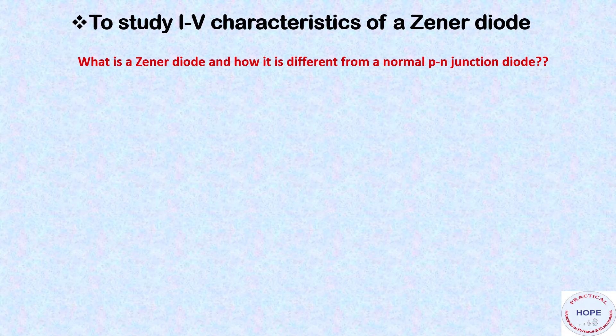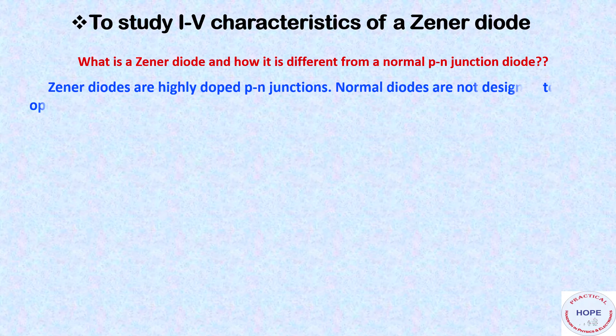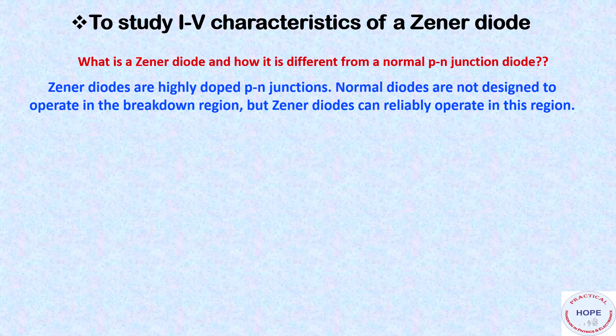What is a Zener diode and how it is different from a normal PN junction diode? Zener diodes are highly doped PN junctions. Normal diodes are not designed to operate in the breakdown region, but Zener diodes can reliably operate in this region.